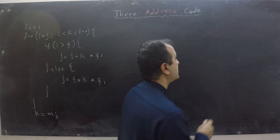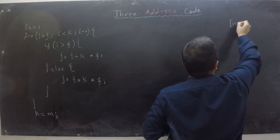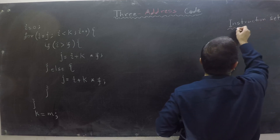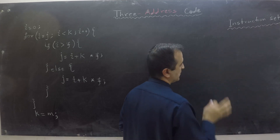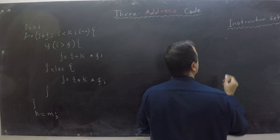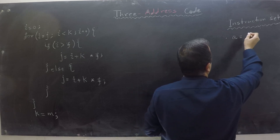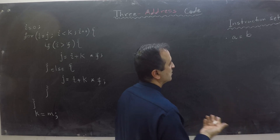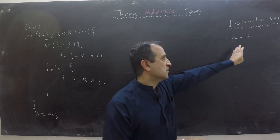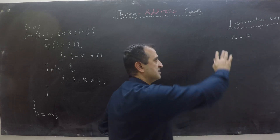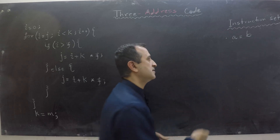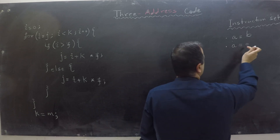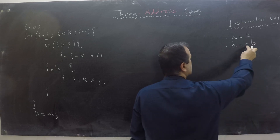Let me first write our instruction set for three address code. This is not a complete instruction set but sufficient for this video. Number one, we are allowed to write instructions which have only two addresses, like A equals B. Here A and B sometimes refer to registers or variables. In any instruction we are not allowed to use more than three registers, so this instruction is fine because it has two registers. Second, we can also have an instruction A equals a unitary operator times B.